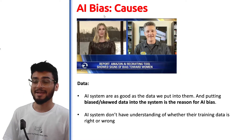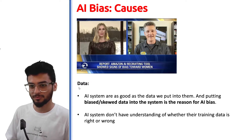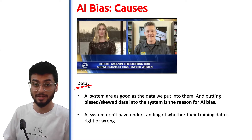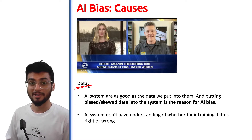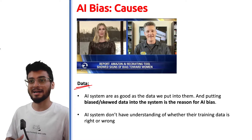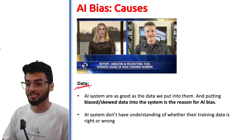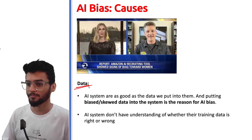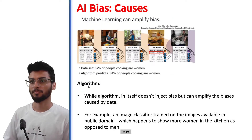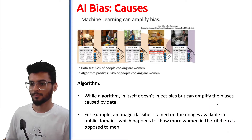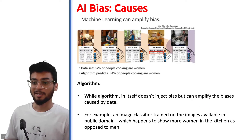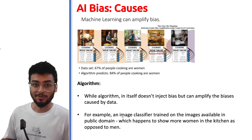There are many causes — how can AI bias happen? The first cause is data. If you have a problem in the data, if you have biased data, then you will create AI bias inside your AI technology.